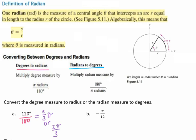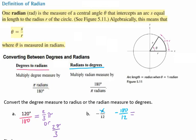Now we're going to convert negative pi over 12 into a degree, which means we should be multiplying our radian measure by 180 and dividing by pi. Notice that there's already a pi in the numerator, so if I divide by pi, I can cross those out. I'm going to put 180 in the numerator and 12 in the denominator, giving me negative 180 over 12. Simplifying that, I get negative 15 degrees.